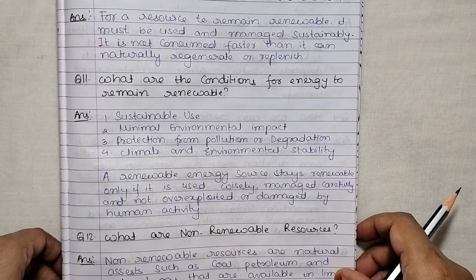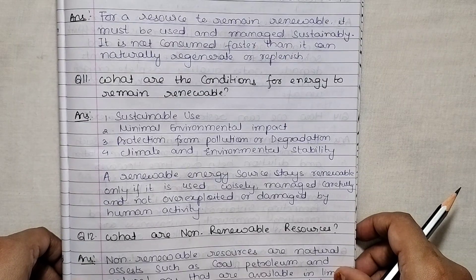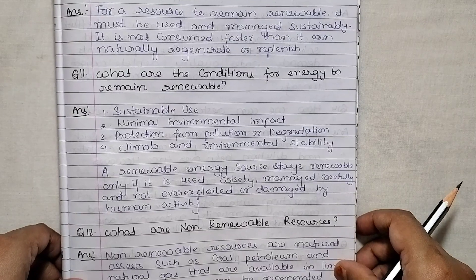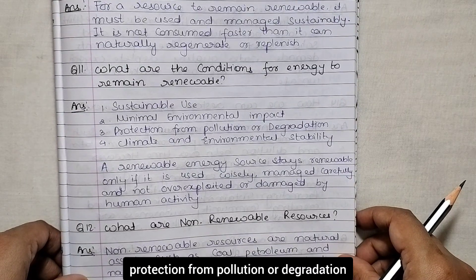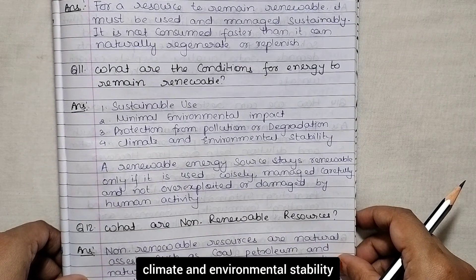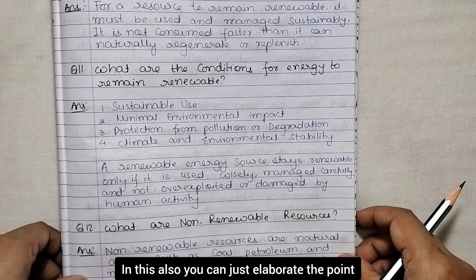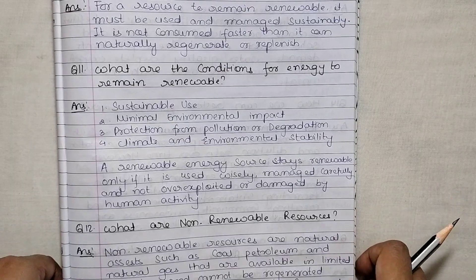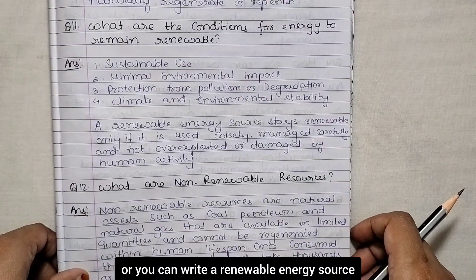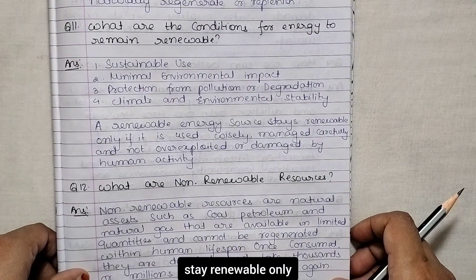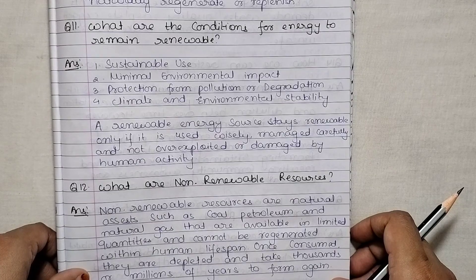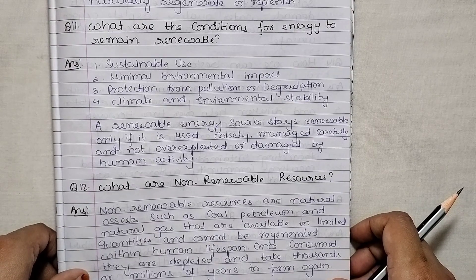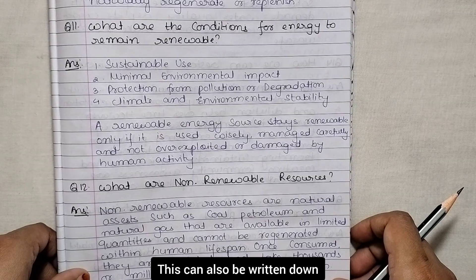Next: what are the conditions for energy to remain renewable? The conditions are sustainable use, minimal environmental impact, protection from pollution or degradation, and climate and environmental stability. In short, a renewable energy source stays renewable only if it is used wisely, managed carefully and not over-exploited or damaged by human activity.